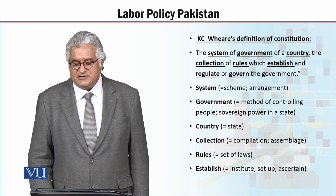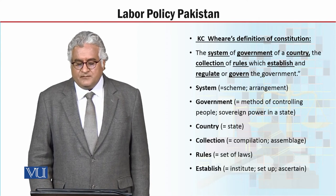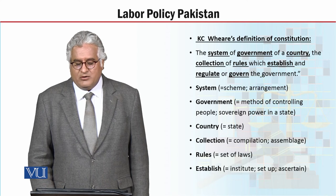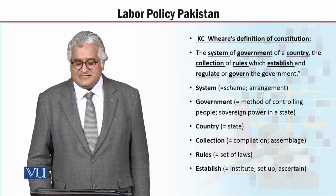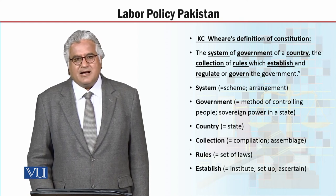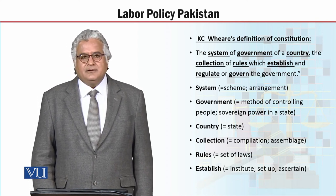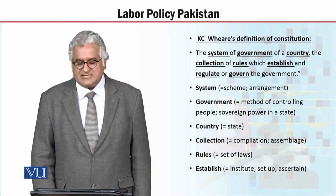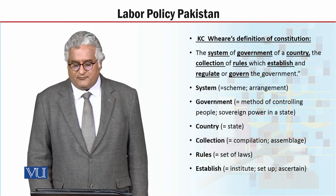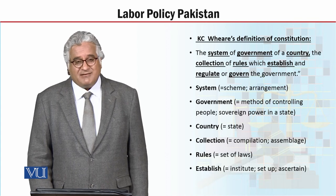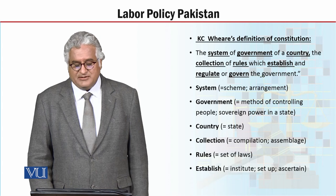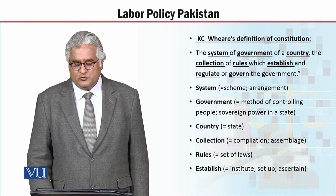Now let's move on to Casey Weir's definition of constitution. Casey Weir, a political philosopher, says: the constitution is the system of government of a country — the collection of rules which establish and regulate or govern the government. In simple terms, the constitution gives the system of government, makes rules, and establishes how the government is to be run. Key terms: 'system' means scheme or arrangement; 'government' means method of controlling people or sovereign power in a state; 'country' means state; 'collection' means compilation or assemblage; 'rules' means set of laws; 'establish' means to institute, set up, or ascertain.